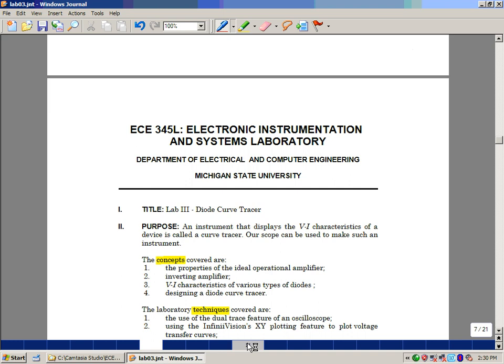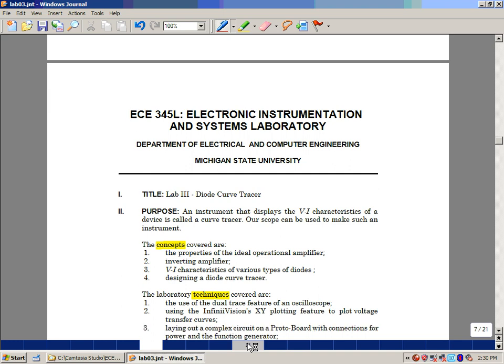So the purpose of this lab is to make an instrument that can plot the voltage and current characteristics of devices. We're going to be interested in looking at some types of diodes actually in the lab. And the concepts that we just covered are properties of ideal op-amps, the inverting amplifier, the VI characteristics of a specific type of diode, including LEDs. And then we looked at a little bit of the designing of a curve tracer.